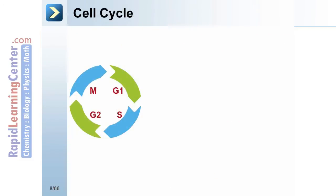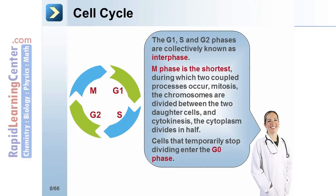There are four phases in the cell cycle: G1, S, G2, and M phases. The G1, S, and G2 phases are collectively known as interphase.